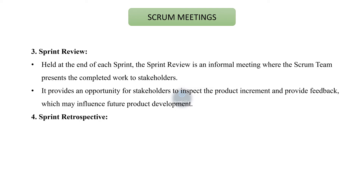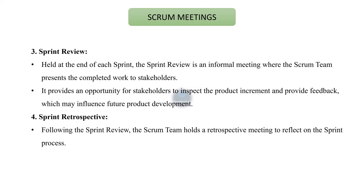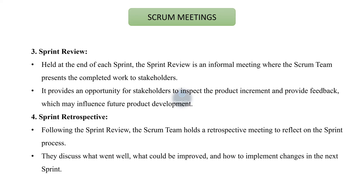The fourth Scrum meeting is the sprint retrospective. Following the sprint review, the Scrum team holds a retrospective meeting to reflect on the sprint process. They discuss what went well, what could be improved, and how to implement changes in the next sprint.